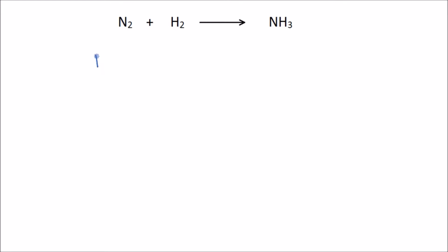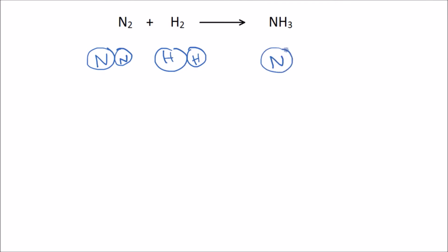On the left-hand side, we have two nitrogen atoms bonded together and two hydrogen atoms bonded together — so that's two of each. On the right-hand side, we have one nitrogen bonded to three hydrogen atoms. So immediately we see the problem: we have two nitrogens on the left and only one on the right, and two hydrogens on the left but three on the right. So it's unbalanced.